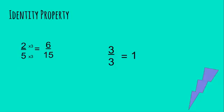So the identity property proves that if you multiply any number by one, you will get the same number. When you multiply the numerator and denominator of a fraction by the same number, you will get an equivalent fraction.